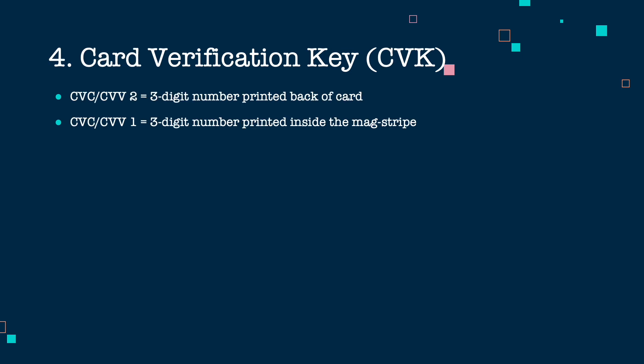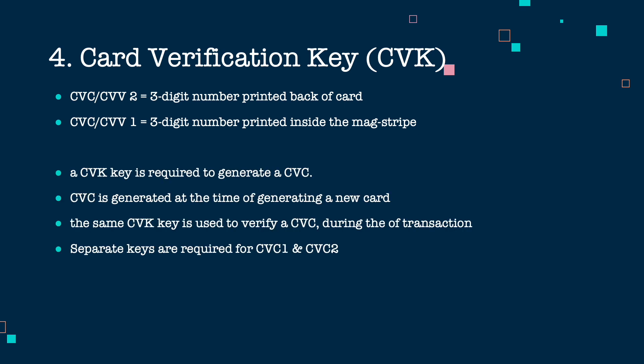The next key is the Card Verification Key (CVK). CVC1 and CVC2, which are printed on the magnetic stripe or the back of the card, are generated whenever a new card is issued. To generate a CVC, we require the card number, the expiry date, the service code, and the card verification key. There are separate keys for CVC1 and CVC2. I have covered CVC in detail in a separate video.